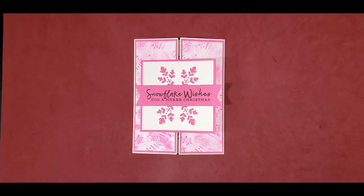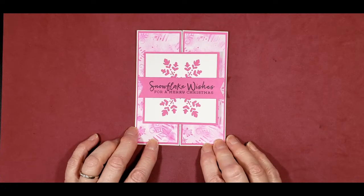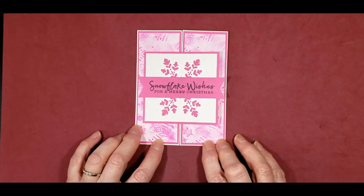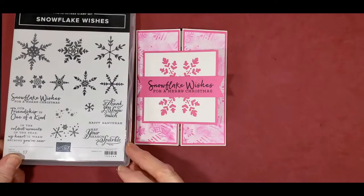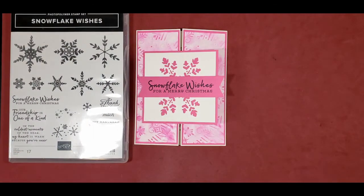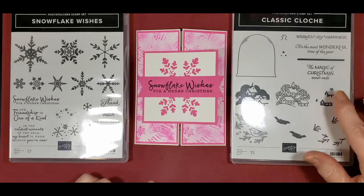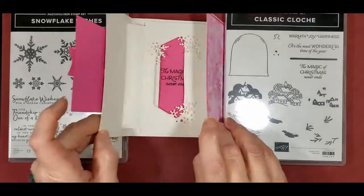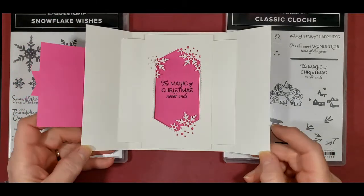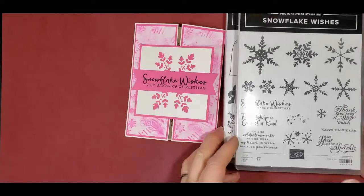Here's the card we're going to make and I made it in Magenta Madness because I really like that color. We're going to use the Snowflake Wishes stamp set and we're also going to use the Classic Cloth for the sentiment. It's an inside sentiment we needed that. We'll get started.